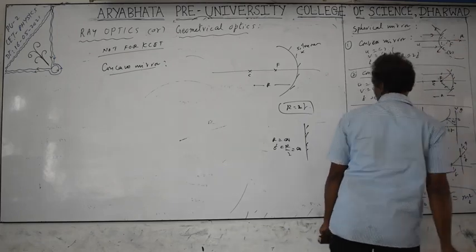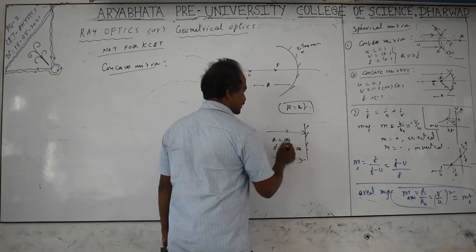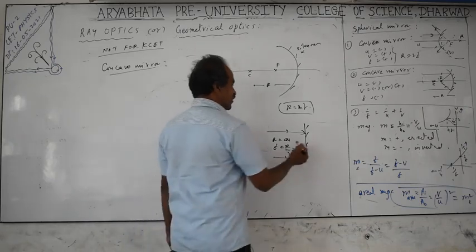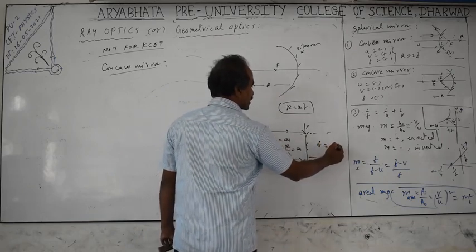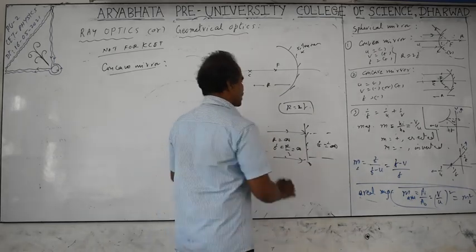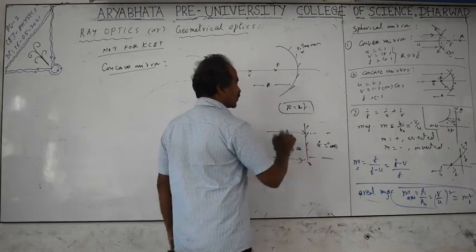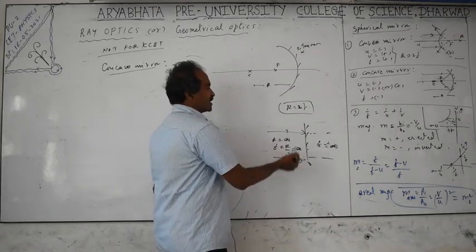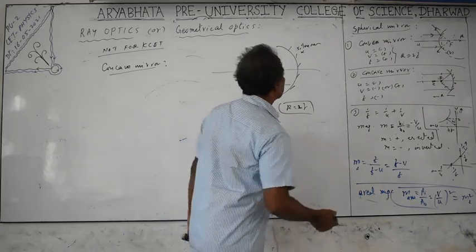For a convex mirror, the focus is behind the mirror, so it is a virtual focus. Virtual images are ones where rays appear to meet rather than really meeting. For a plane mirror, reflected parallel rays appear to meet at infinity — they don't actually meet — so focal length is infinity. Plane mirror: focal length is infinity, radius of curvature is also infinity. These are important points to remember for spherical mirrors.